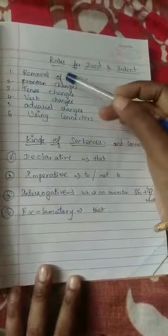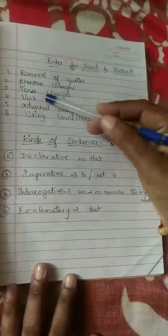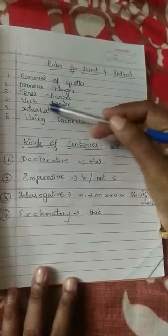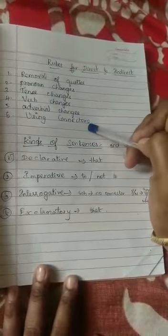The six rules are: removal of quotes, pronoun changes, tense changes, verb changes, adverb changes, and using a connector.